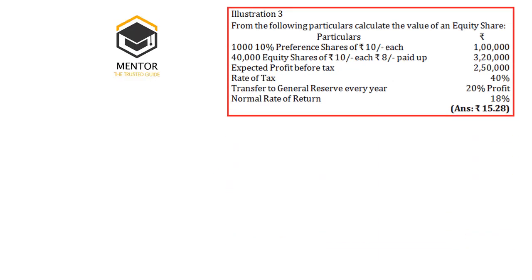We will take up the first question: from the following particulars, calculate the value of share. Data: 1,010% preference shares of Rs. 10 each — Rs. 1,00,000; 40,000 equity shares of Rs. 10 each, Rs. 8 paid-up (Rs. 2 is final call, still outstanding and unpaid). Expected profit before tax is Rs. 2,50,000. Tax rate is 40%. Transfer to general reserve every year is 20%. Normal rate of return is 18%.